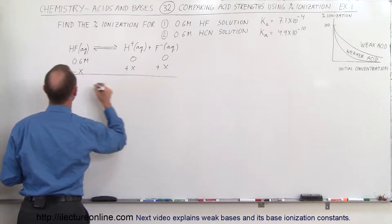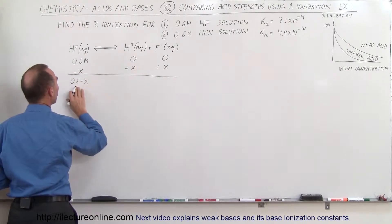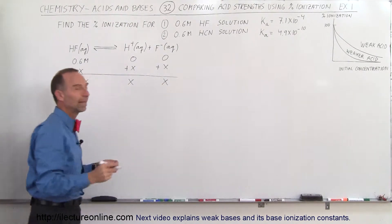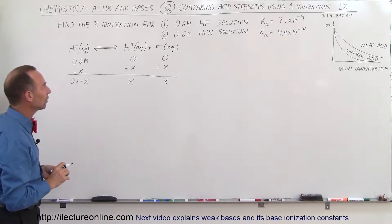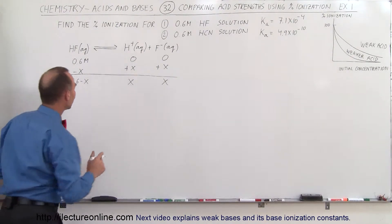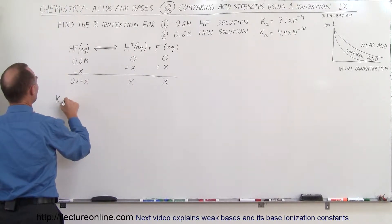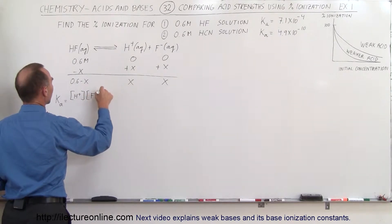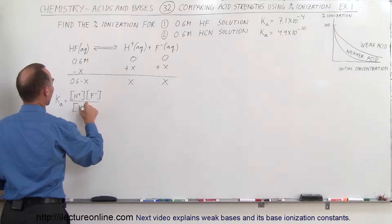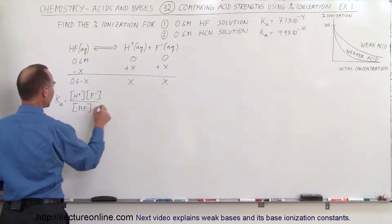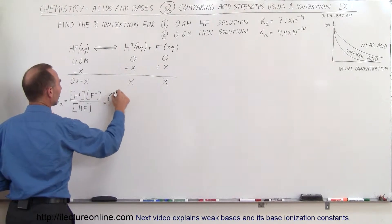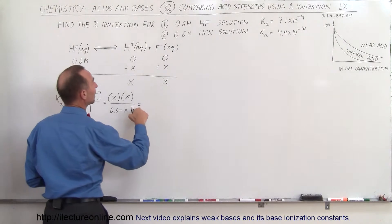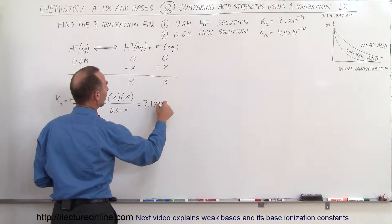At equilibrium, we end up with 0.6 minus X molar of hydrofluoric acid, and X and X for the ions. The ionization constant is equal to the concentration of the hydrogen ion times the concentration of the conjugate base, divided by the final concentration of the acid. This equals X times X divided by 0.6 minus X, which should equal the ionization constant of 7.1 times 10 to the minus 4.